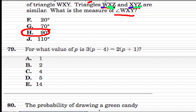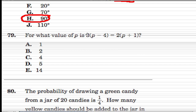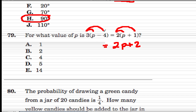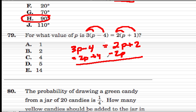In the next problem, they want us to find the value of p if this expression equals that one. I'm going to use the distributive property to start — distribute the 2 to the p and the 1, and then the 3 to the p and the 4, giving 3p minus 4. Now I'll move the p's over to one side, subtract 2p from both sides, and add 4 to both sides at the same time. This gives 0 on one side, 6 on the other, and 3p minus 2p is p. So p should equal 6.